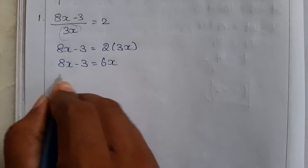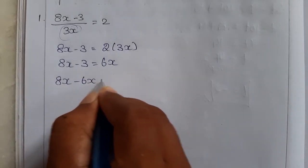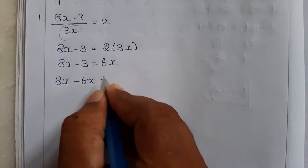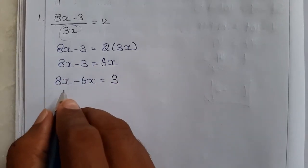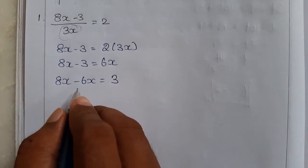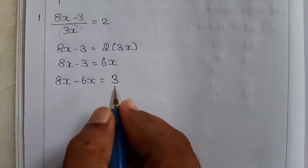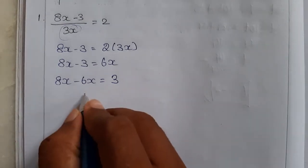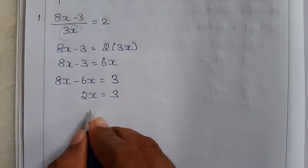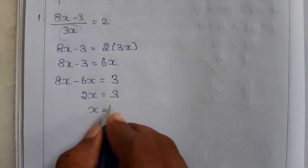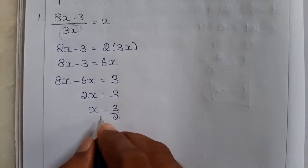Just bring 6x to this side — it will become subtraction. So, 8x minus 6x is equal to 3 (since moving minus 3 to the right makes it plus 3). That gives us 2x is equal to 3, and therefore x is equal to 3 by 2.